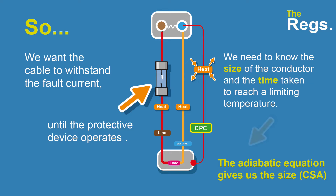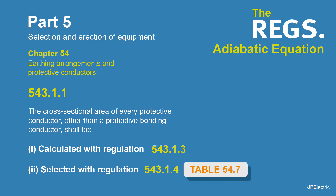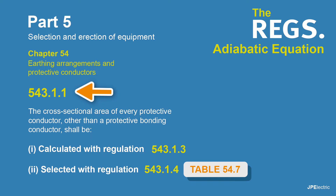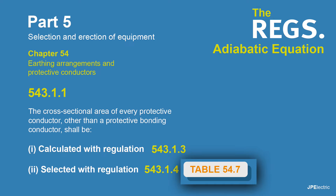The adiabatic equation is for your protective conductors, and it's generally for faults under 5 seconds. It's mentioned in Part 5 of BS7671, Selection and Erection of Equipment — Chapter 54, Earthing Arrangements and Protective Conductors. The regulation number is 543.1.1: the cross-sectional area of every protective conductor, other than a protective bonding conductor, shall be calculated or selected. The adiabatic equation is the calculated method, or there's also a table that we can look at, which I'll mention further on in the video.